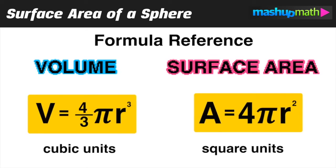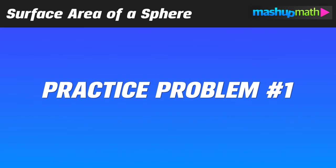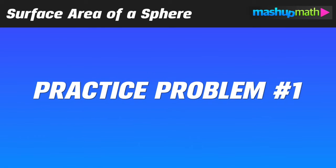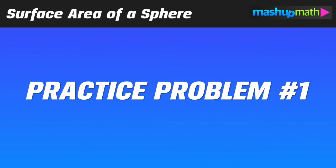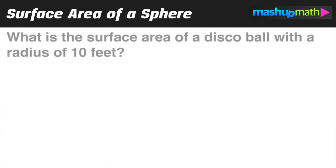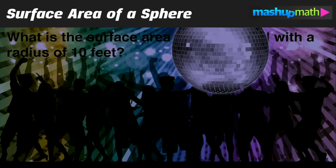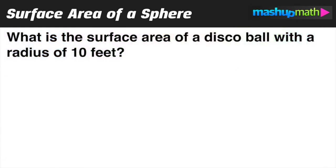Make sure you have these two formulas available, as we are going to apply them in the next two examples. In our first example, we want to find the surface area of a disco ball with a radius of 10 feet. It is always a good idea to start by identifying the key information — in this case we want to find surface area and our radius is 10.